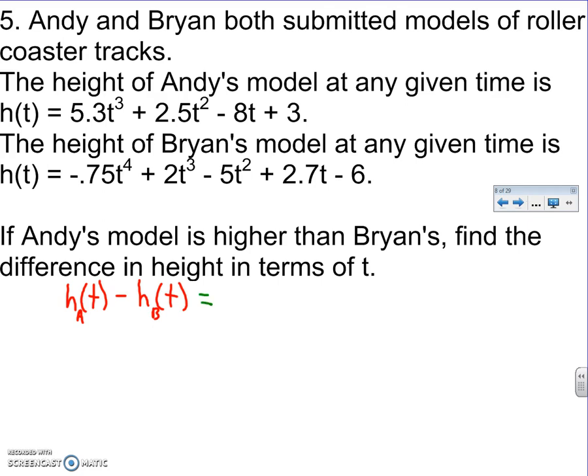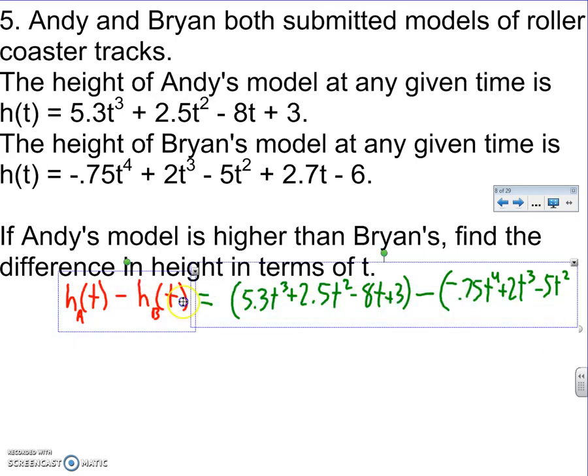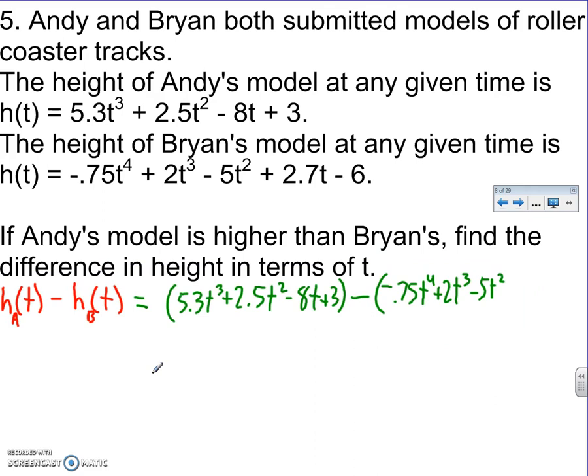So this is going to be parentheses 5.3T³ + 2.5T² - 8T + 3, minus, we're subtracting difference, -0.75T⁴ + 2T³ - 5T². And I'm running out of room, so let me scoot this all over to the left.